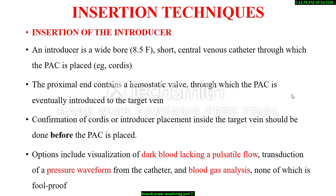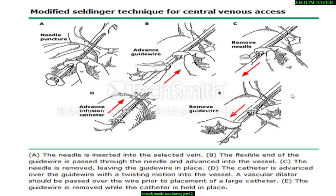Regarding insertion of the introducer: following site selection, the patient should be positioned in the Trendelenburg position for the jugular or subclavian approach, or supine position for the femoral or antecubital approach. An introducer is a wide-bore 8.5-French short central venous catheter through which the pulmonary artery catheter is placed. The proximal end contains a hemostatic valve through which the pulmonary artery catheter is eventually introduced to the target vein. Confirmation of the introducer placement inside the target vein should be done before the pulmonary artery catheter is placed. Options include visualization of dark blood lacking a pulsatile flow, transduction of the pressure waveform from the catheter, and blood gas analysis, none of which is foolproof. Insertion of the pulmonary artery catheter is generally done according to the modified Seldinger technique.